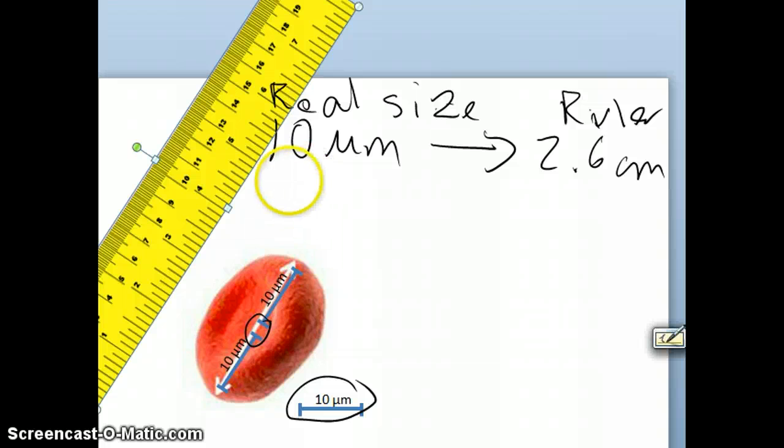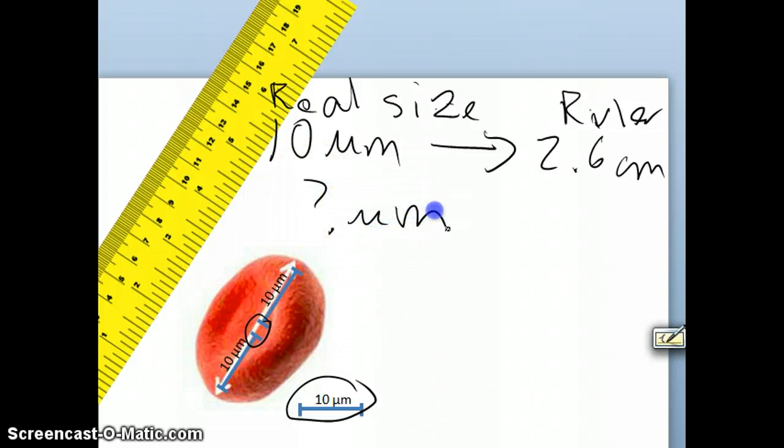Okay, so it is about real size of this red blood cell, I don't know, I'm trying to find out, in micrometer, and the ruler says it is 6.6 cm. Now, using the law of ratio, what I could say is that 10 divided by this is equal to 2.6 divided by 6.6.